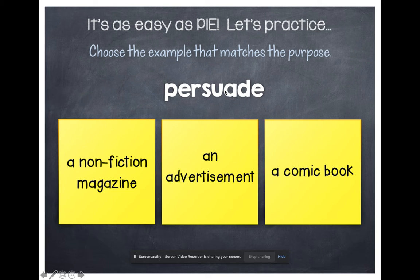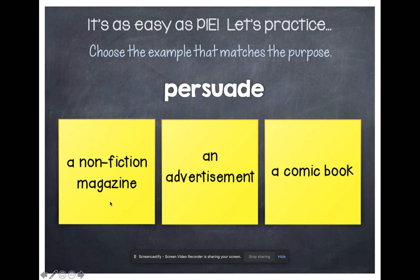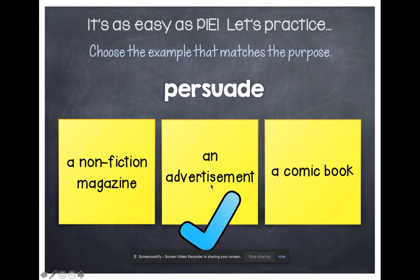This one, we're looking for something that persuades us — that's trying to convince somebody of something. Would a non-fiction magazine, an advertisement, or a comic book convince somebody of something? A non-fiction magazine would be to inform, and a comic book would be to entertain. So an advertisement, which is trying to convince us to buy something, would be to persuade.